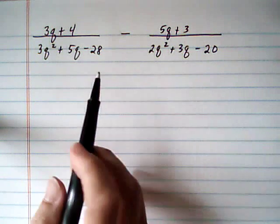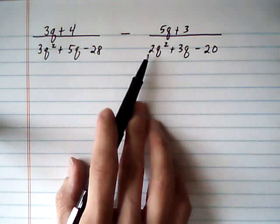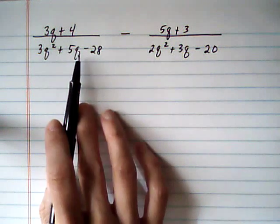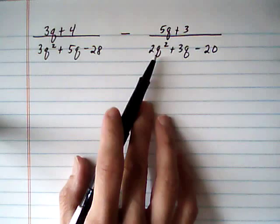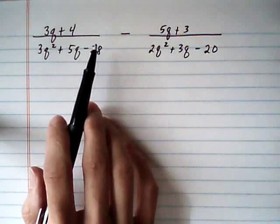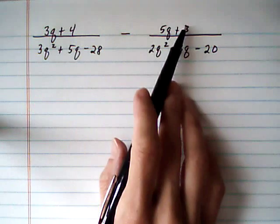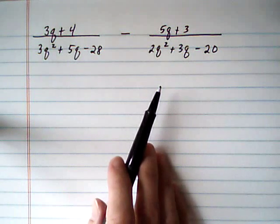Subtract the rational expressions. These two rational expressions have different denominators, which are both trinomials, and the first thing we're going to need to do is force them to have the same denominator. Once they have a common denominator, we can go ahead and subtract our numerators and put everything over the common denominator.